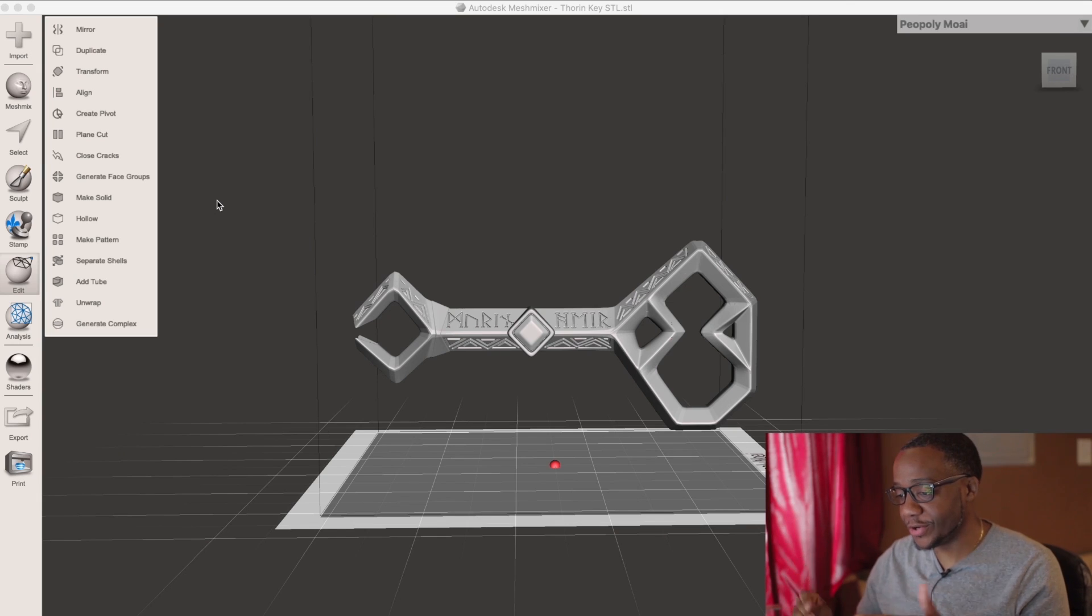So hey guys, we're back at the computer. I already have the file loaded into Autodesk Mesh Mixer and this is the program that I'm going to be utilizing to hollow out the key so we can print it on the resin style printer.